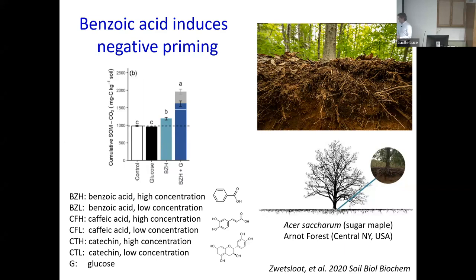The experiment Taryn was doing was taking soils from the maple trees and, in a typical priming experiment, adding different carbon sources to that soil — without the roots present. If you add glucose, you don't really see significant priming. She was adding aromatics because she knew that these roots were producing aromatic phenolic acids in their exudates, and she wanted to know why they were doing this and whether it related to priming. She added benzoic acid as well as combinations of different things, and benzoic acid induced significant priming. There was also a synergistic effect when you had glucose and benzoic acid together.